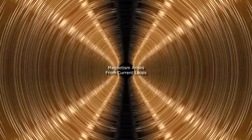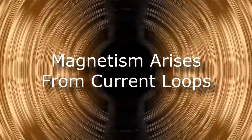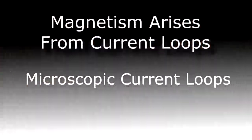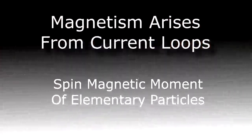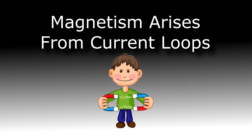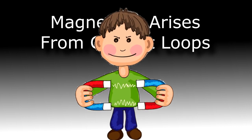So magnetism at its roots arises from current loops, microscopic current loops, spin magnetic moments of elementary particles. This gives rise to magnetic materials like the magnets you're familiar with.